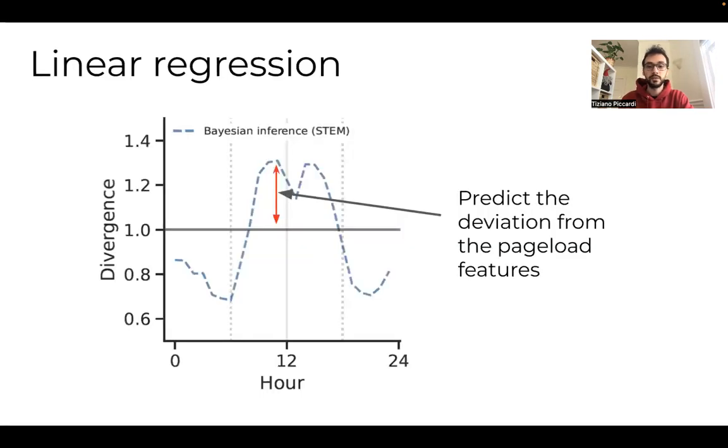In other words, given the properties of the page load, we predict the hourly deviation from the global average. And since we included the interaction term between each feature and the hour of the day, we can investigate these 24 interaction coefficients for each feature and represent them as a daily time series.